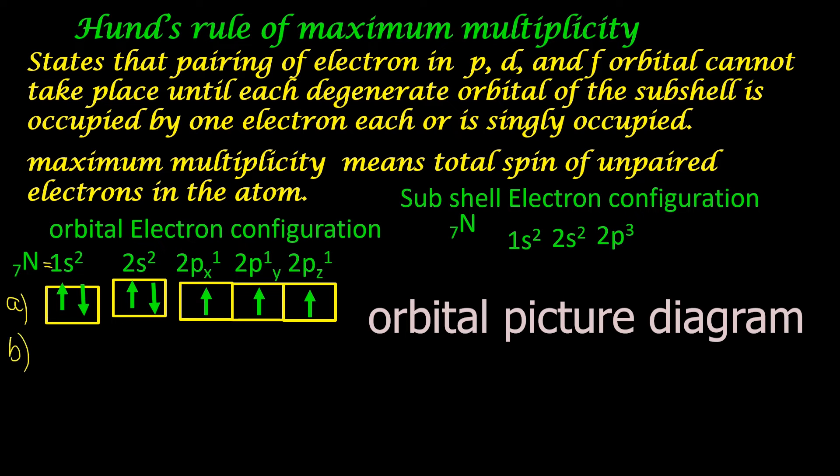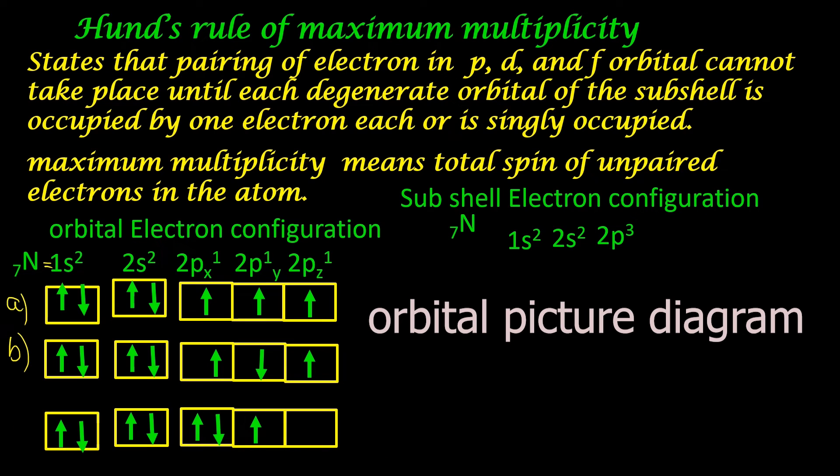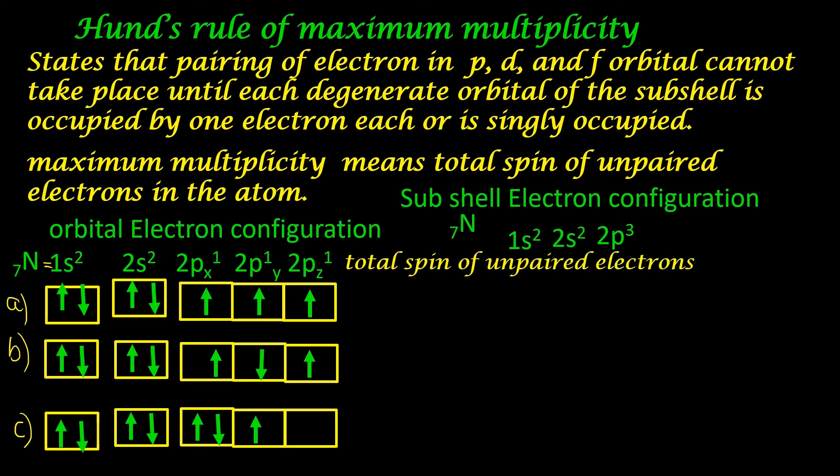Let us see option B. Here the p orbital has three electrons in three separate p orbitals, but one electron here is in the opposite direction. What is the next possibility? Here only one electron of the p orbital is unpaired. px has paired electron and the last orbital is vacant. Let us see which one of these has the maximum total spin, that is maximum multiplicity.